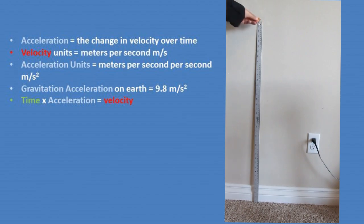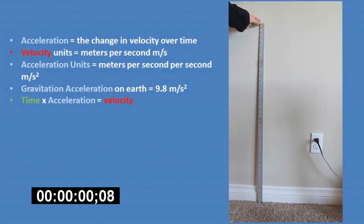Gravitation acceleration on Earth is equal to 9.8 meters per second per second. This means that every second that passes, the velocity changes by 9.8 meters per second. So if we were to take the time in this video in seconds and multiply by 9.8 meters per second per second, we would end up with the velocity at that time.